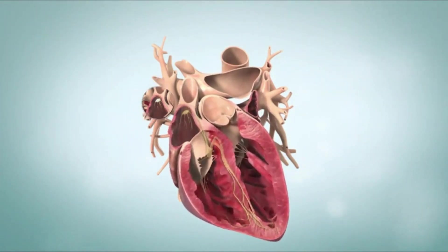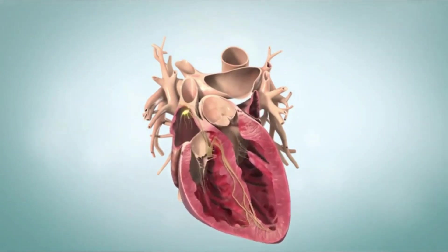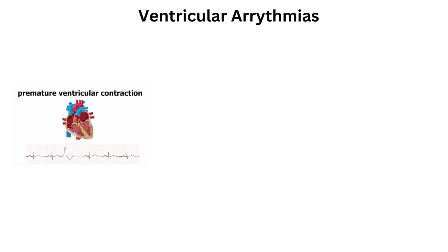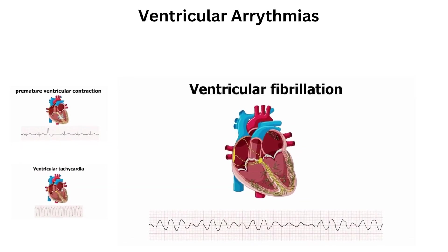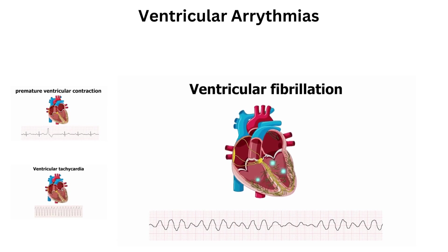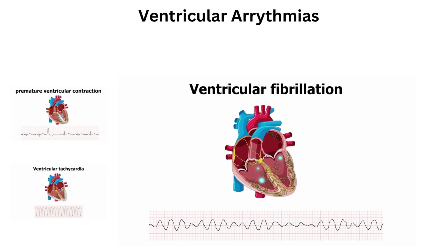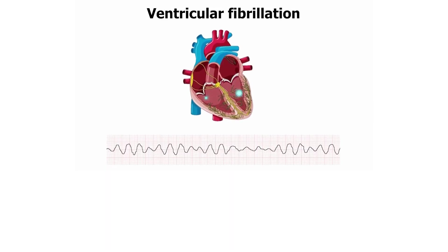Sometimes, under certain conditions, the heart starts beating irregularly, which is called an arrhythmia. Ventricular arrhythmias occur when the ventricles begin to beat irregularly as a result of a conduction error. There are three types of ventricular arrhythmias: premature ventricular contractions, ventricular tachycardia, and ventricular fibrillation. The most dangerous of these is ventricular fibrillation, which causes the heart to quiver or tremble, making it less effective at pumping blood and leading to sudden cardiac arrest.